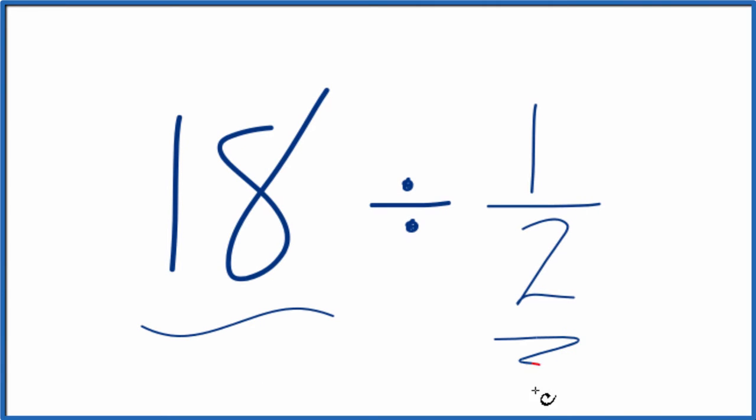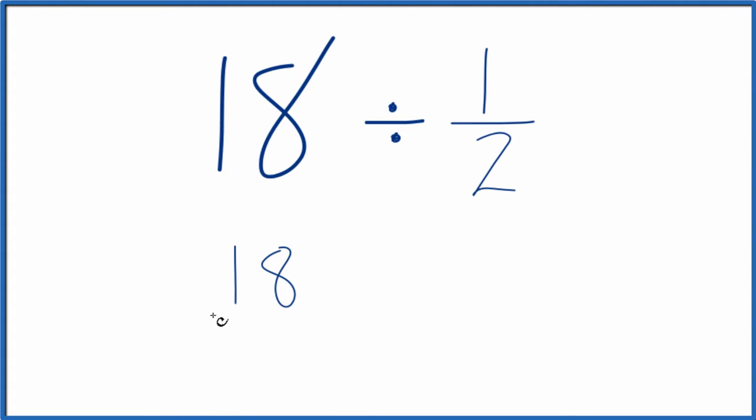Here's how you divide 18 by 1 half. So what we'll do, we'll call 18 18 over 1. It's still 18, we're just dividing by 1, but it's helpful to start out with a fraction here.